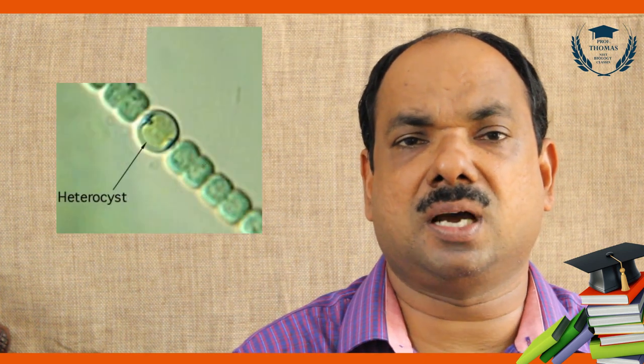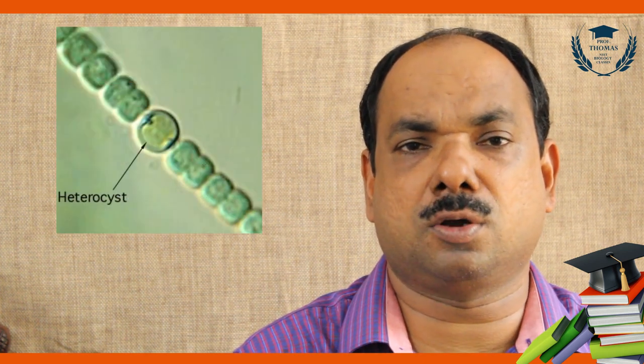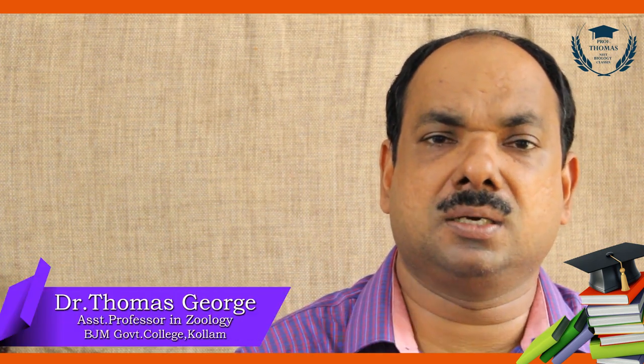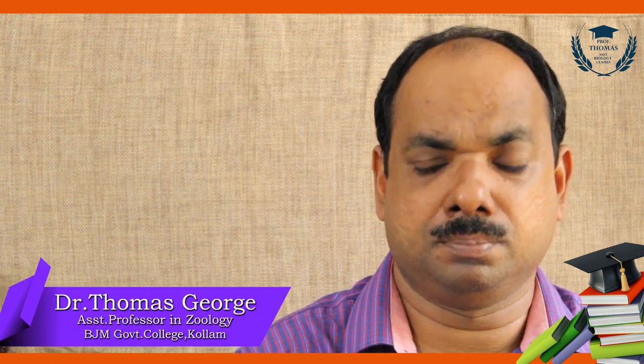One cell of the trichome of Nostoc is enlarged and is called the heterocyst. It contains the nitrogen-fixing enzyme nitrogenase. The metallic part of nitrogenase is molybdenum.